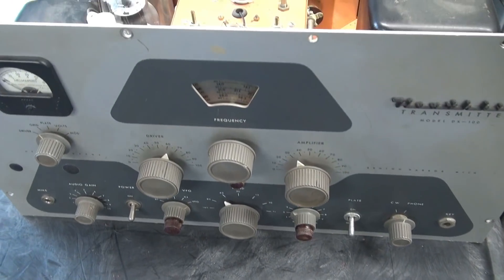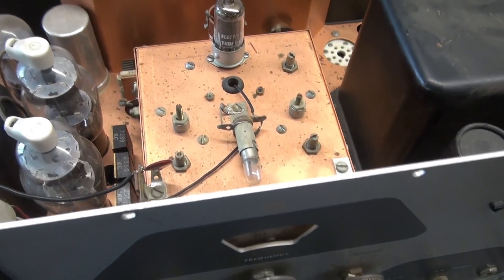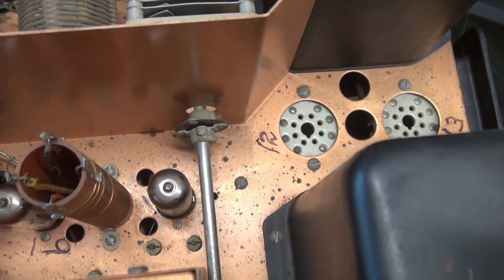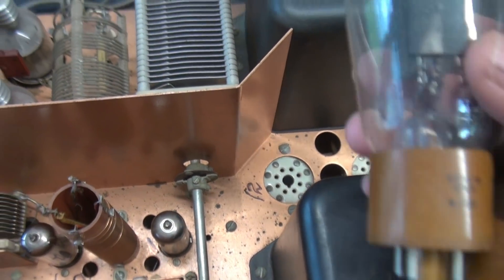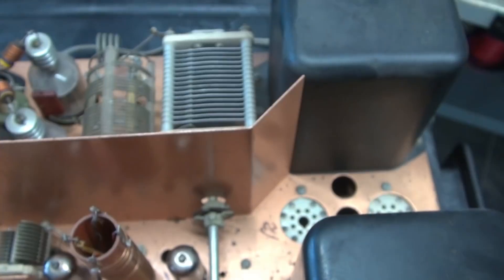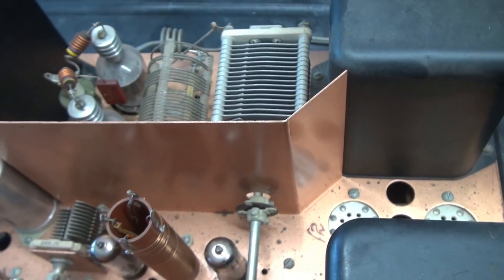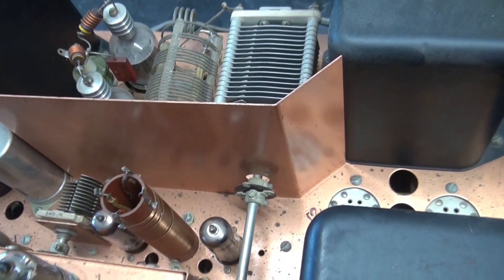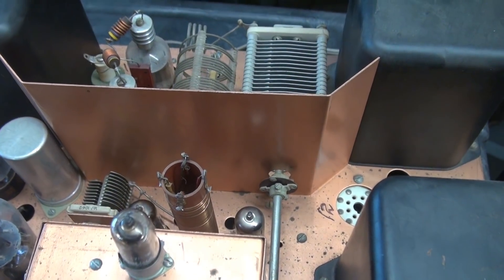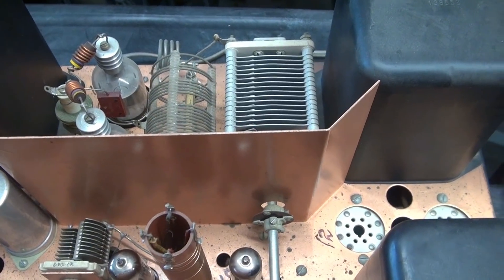So here's the DX100 transmitter that you've seen me working on here the last couple days. Now in this position down here, you would normally see a pair of these 5R4 rectifiers for the high voltage. I actually removed them because I was working on some of the low voltage circuits and I did not want to expose myself to high voltage DC.